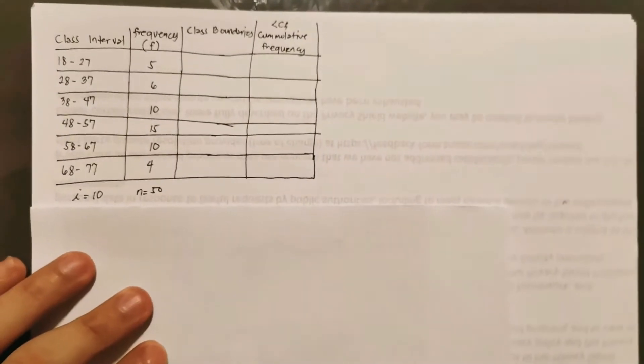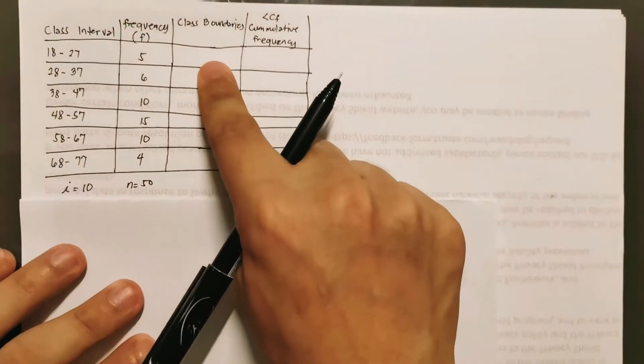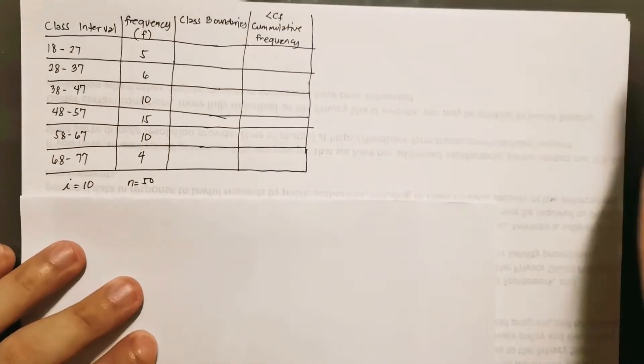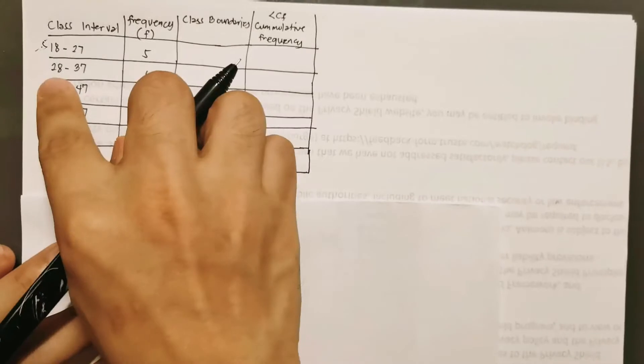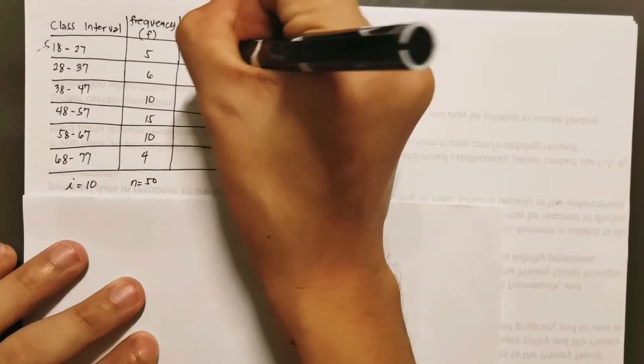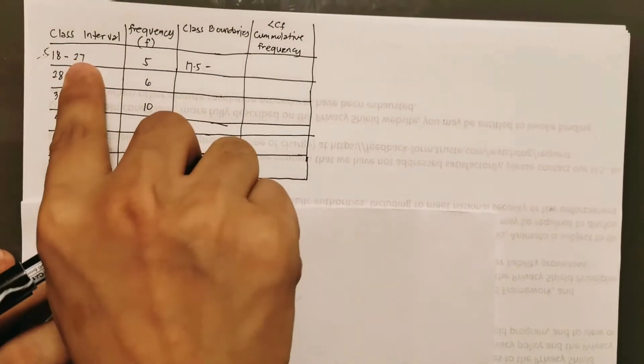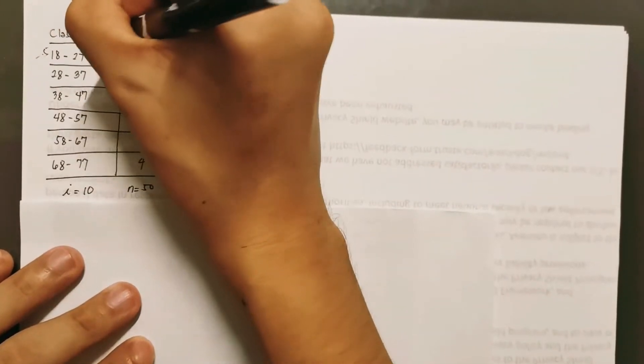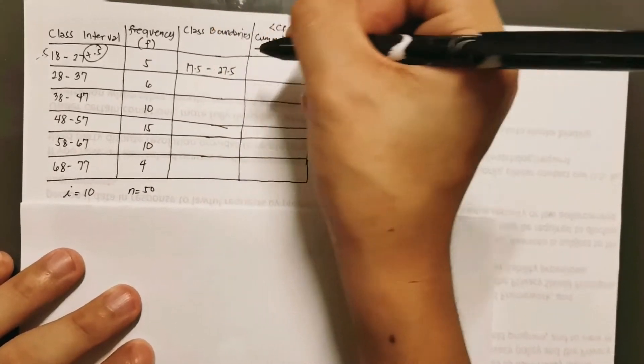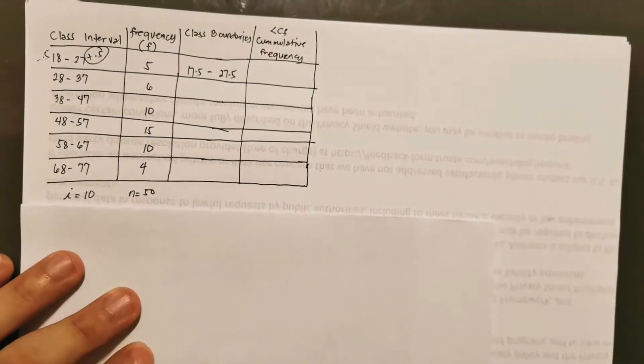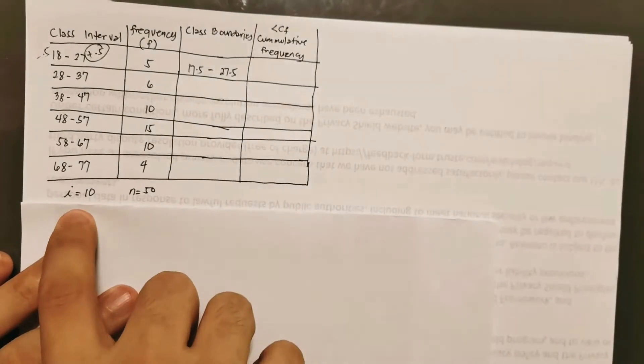So let's start with the class boundaries or class or it's known also as the true limits. So how do we complete this column? To do this one, to get the lower boundary, we call it the lower boundary, our lower limit here is minus 0.5. So 18 minus 0.5, that is 17.5. And then to get its part there, the upper boundary, the upper limit here is plus 0.5. So 27 plus 0.5, that is 27.5. And then to make it easier, instead of doing the whole process over and over again, we will just add our boundaries here with our width.